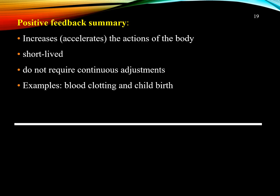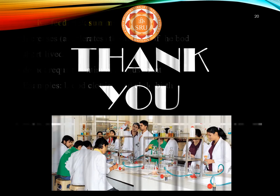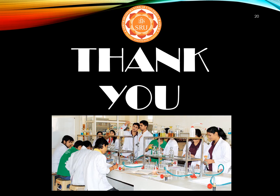Positive feedback has its applications. For example, in nerves, a threshold electric potential triggers the generation of a much larger action potential. Blood clotting, in which the platelet mechanism transforms blood from liquid to solid, is an example of a positive feedback loop. Another example is the secretion of oxytocin, which provides a pathway for the uterus to contract, leading to childbirth. This concludes the discussion of human anatomy.